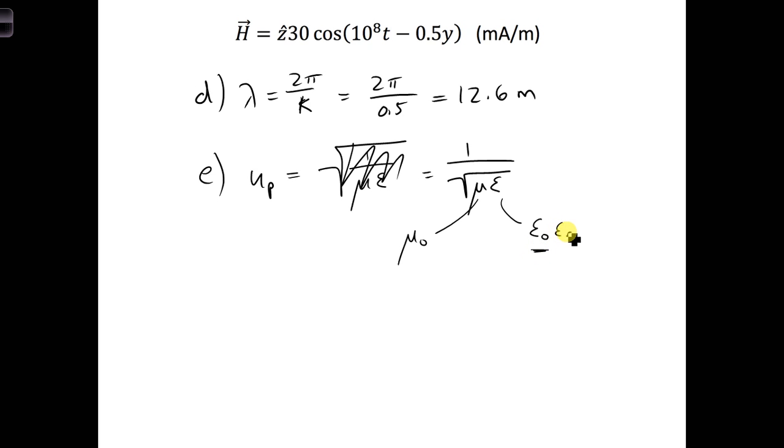So this is a parameter. And then our only unknown is epsilon r. So we can say epsilon r, and once we plug in all the values we previously solved for, is 2.25.